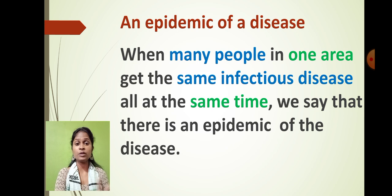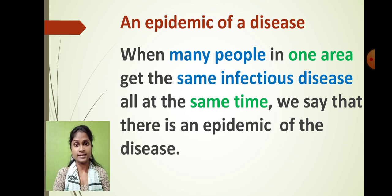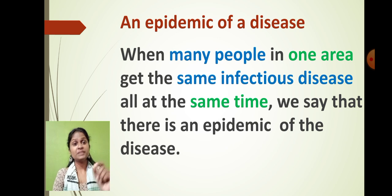In this chapter, we have learnt about how exactly the waterborne diseases, foodborne diseases, and mosquito-borne diseases are spread. We also learnt what exactly is meant by the epidemic of a disease. When many people in one area get the same infectious disease at the same time, we call it an epidemic of the disease.